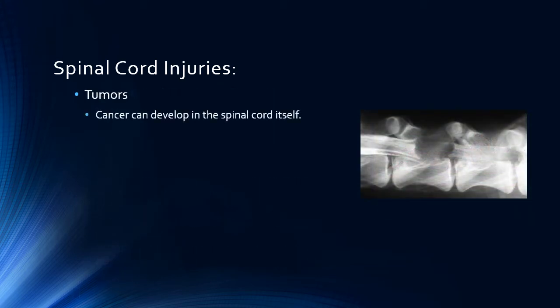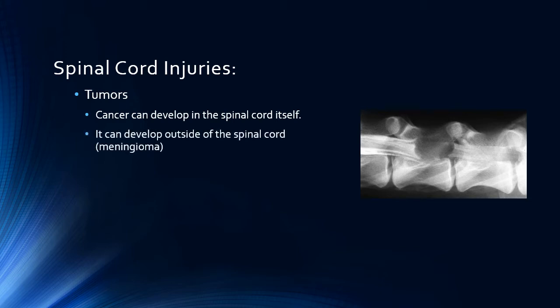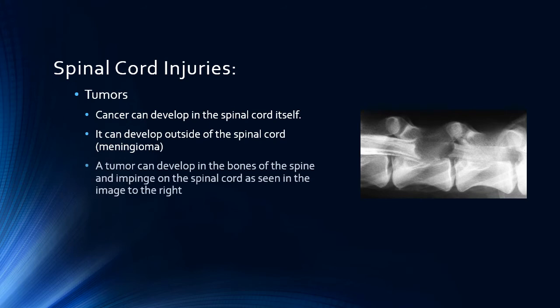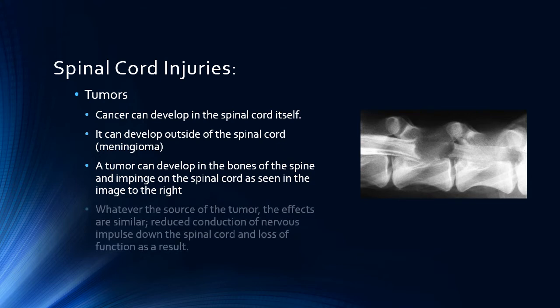Cancer is another reason for spinal cord injuries. Tumors can develop within the spinal cord itself, such as lymphoma. They can develop in tissues surrounding the spinal cord, such as meningioma. Alternatively, a tumor can develop in the bone of the spinal column and cause damage, as in multiple myeloma or osteosarcoma. Regardless of the source, as the tumor grows and compresses or destroys parts of the spinal cord, loss of function will ensue.